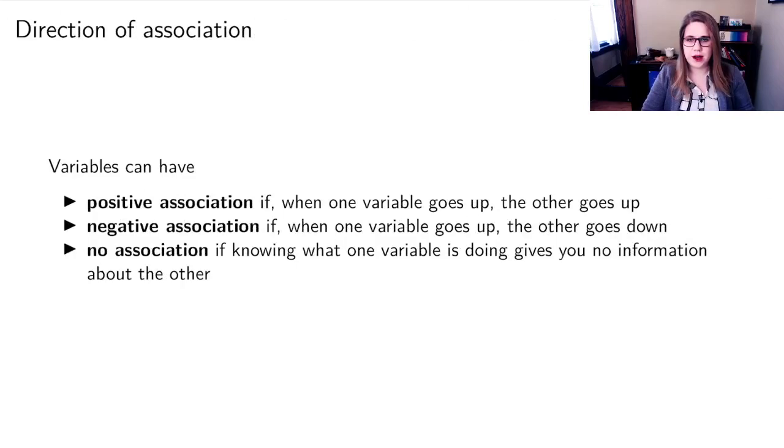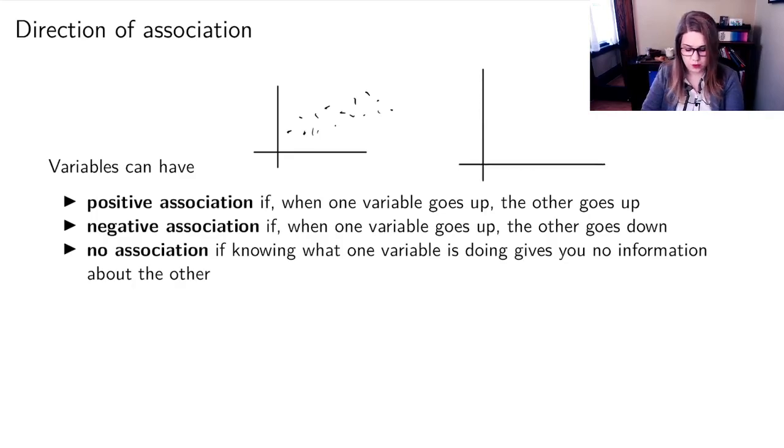Variables could have a direction of association. They can have positive association if when one variable goes up, the other goes up. We could have negative association where when one variable goes up, the other goes down.